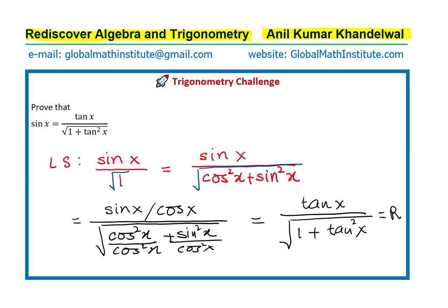I hope it makes sense. An easier way could have been to start with the right-hand side and then easily arrive at sin x. However, I wanted to teach you a very simple and important strategy: we could multiply and divide by 1, by 1 squared, or by the square root of 1. That is what we have learned in this video, and that is going to help us solve very difficult trigonometric identities in future.